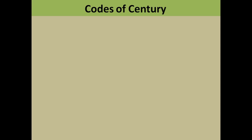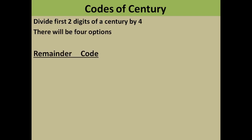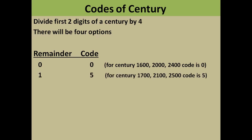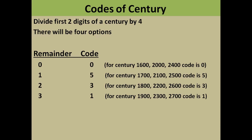Another thing you need to learn is the codes of the century — 2000, 1900, 1800, 1700, etc. You divide the first two digits of the century by four. The remainder determines the code: remainder 0 → code 0; remainder 1 → code 5; remainder 2 → code 3; remainder 3 → code 1. So the century codes are 0, 5, 3, and 1.